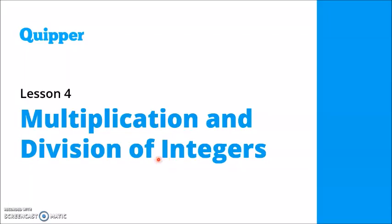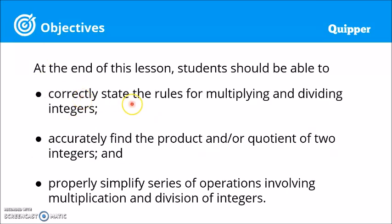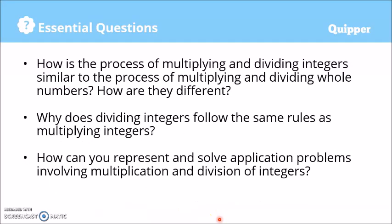Hi, in this video we are going to talk about multiplication and division of integers. So at the end of this lesson, you should be able to correctly state the rules for multiplying and dividing integers, accurately find the product and/or quotient of two integers, and properly simplify series of operations involving multiplication and division of integers. The essential questions we want to answer are: how is the process similar to multiplying whole numbers, how are they different, why does dividing integers follow the same rules as multiplying integers, and how can you represent and solve application problems involving multiplication and division of integers?